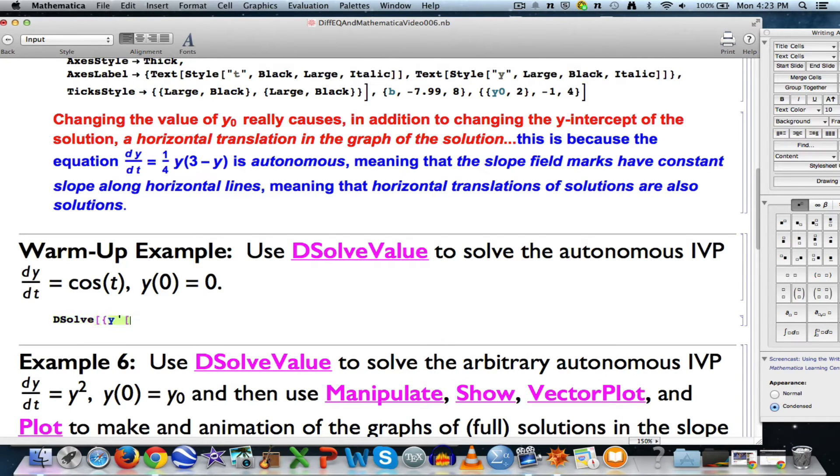Here's how we use DSolve to solve this. dy/dt double equals cos(t). It must be a capital cos in Mathematica. I'll put a comma, initial condition, y(0) double equals 0. I'll put that inside curly braces and a comma in between. Then do another comma, y(t), another comma t.